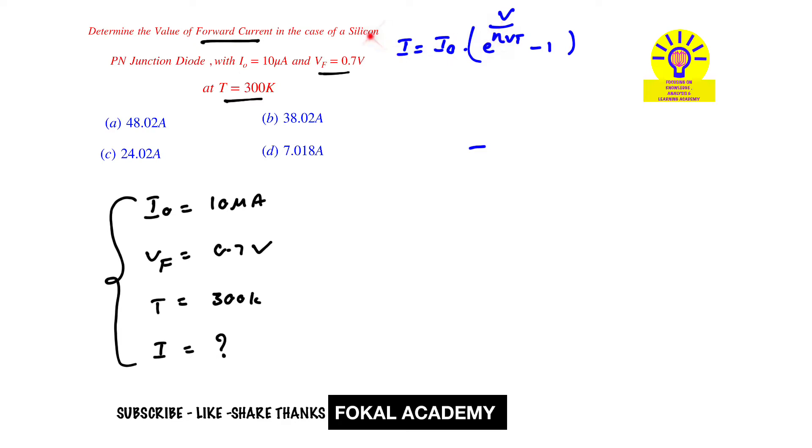Suppose germanium is given, then eta equals 1. For silicon, eta equals 2. What is Vt? Vt is called thermal voltage. At room temperature, Vt is 26 millivolts. Now substitute all the data in this equation.